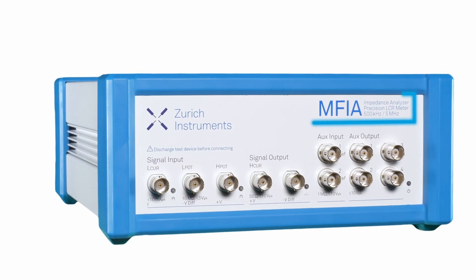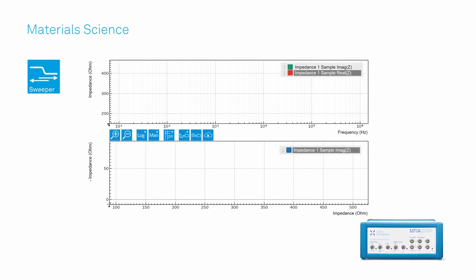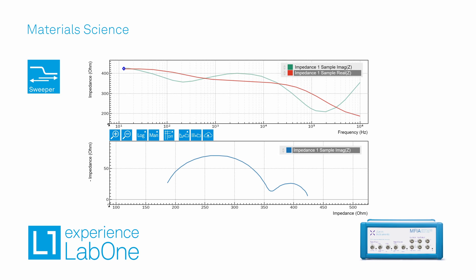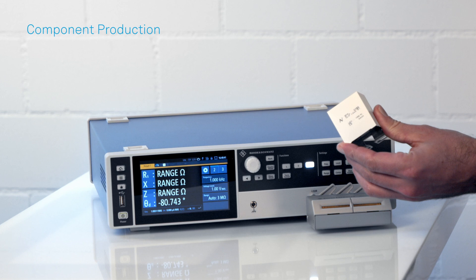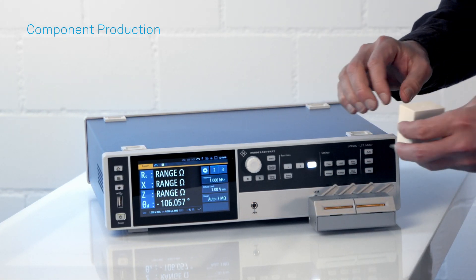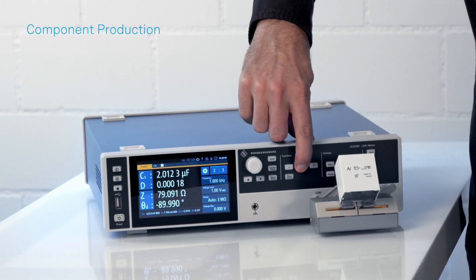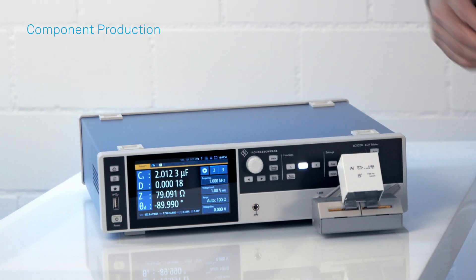Keep in mind some instruments do offer both capabilities in one. As a first example application, let's take material science. When sweeping the frequency, impedance spectroscopy yields the most detailed information of any electrical characterization. The MFIA is a good choice here thanks to the advanced LabOne sweeper function. For component and production testing or for more advanced measurements such as transformer characterization, you'll typically need to test at one frequency to check if a component passes or if the new development was successful. For such applications, consider an LCR meter such as the LCX.